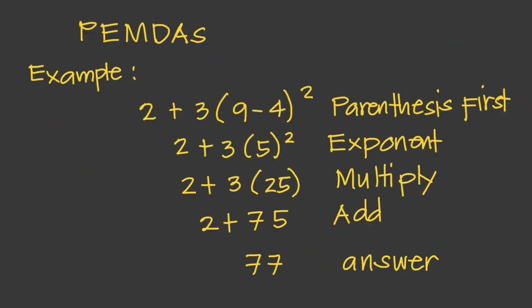For example, given the problem two plus three times (nine minus four) squared: first, solve inside the parentheses — nine minus four equals five. Then evaluate the exponent — five squared equals 25. Then multiply three and 25 to get 75. Then add two plus 75 to get the correct answer, 77. Remember that multiply and divide are performed from left to right.